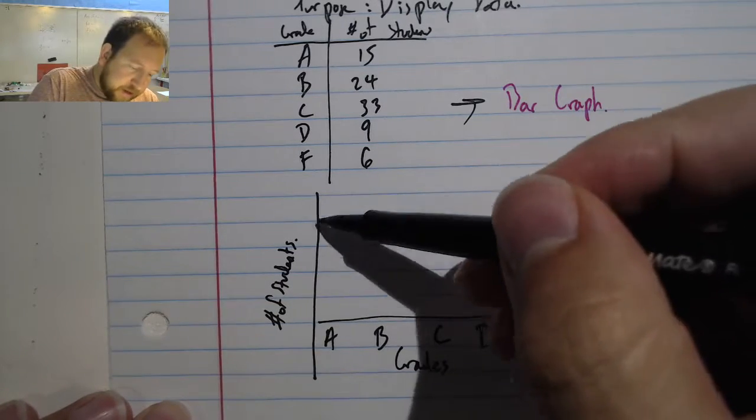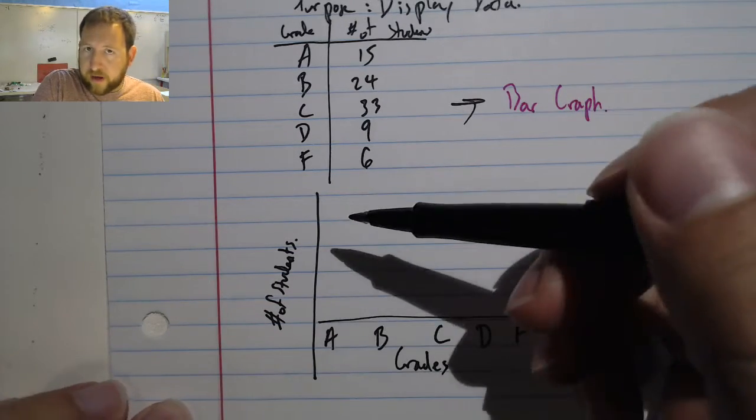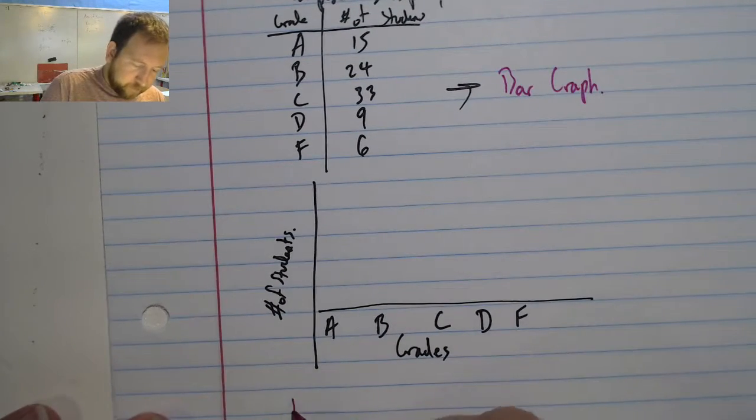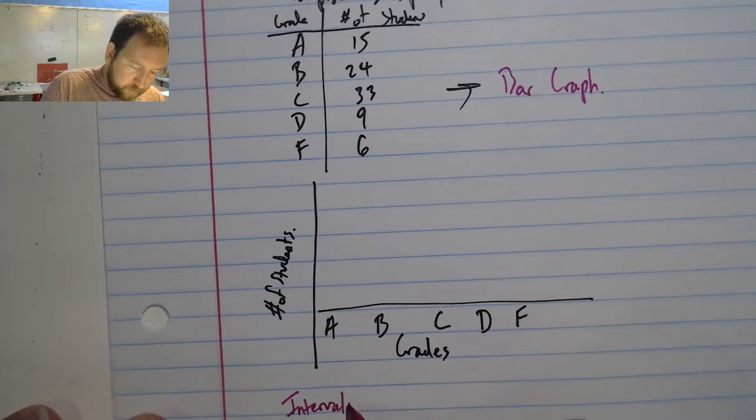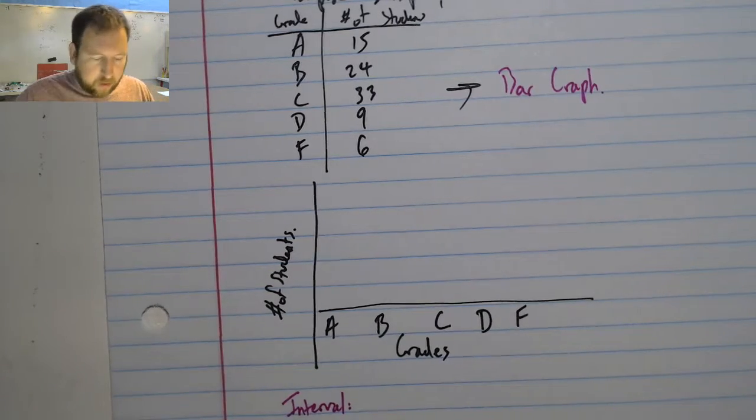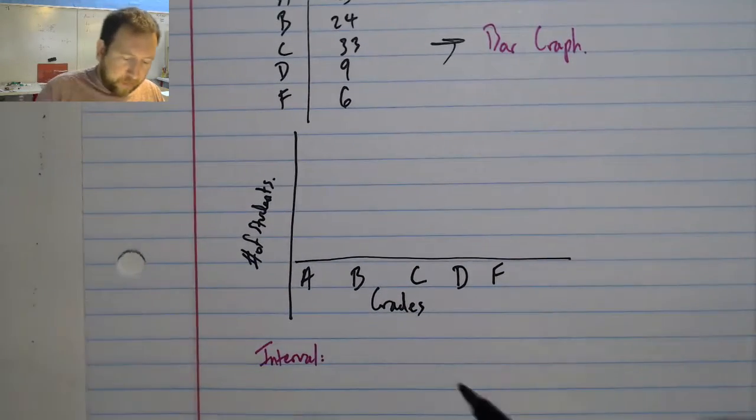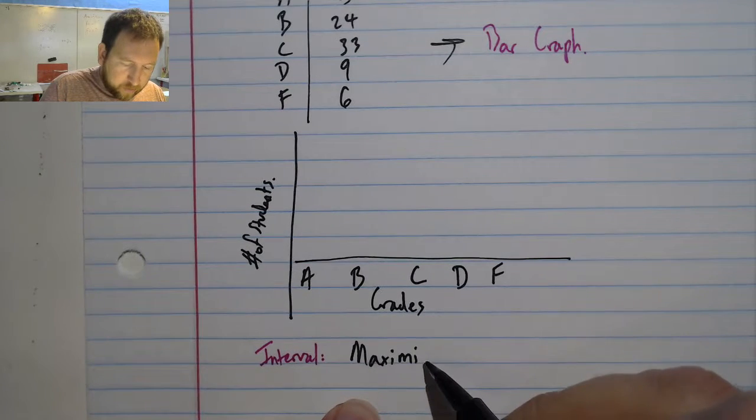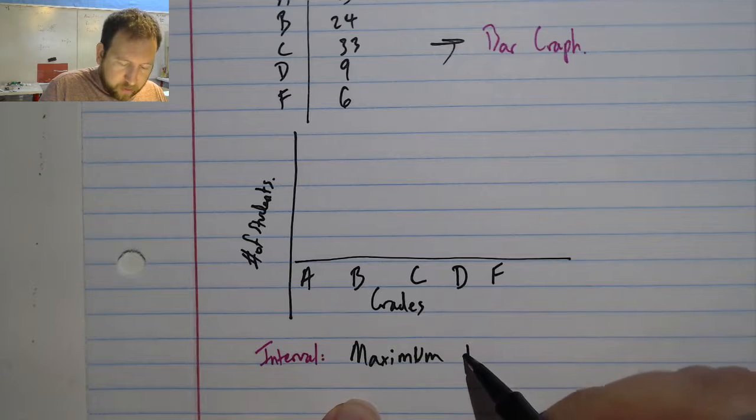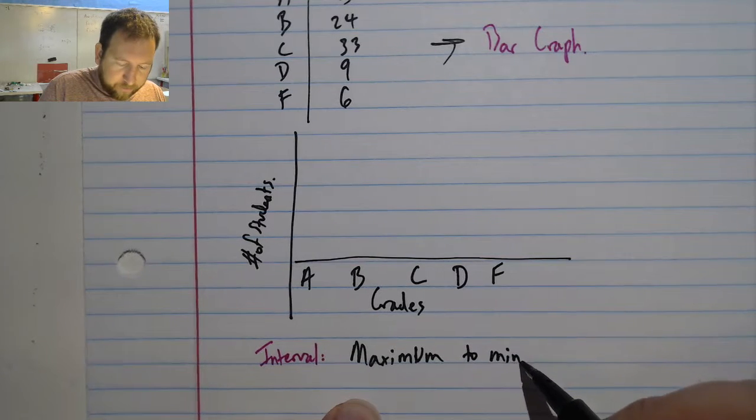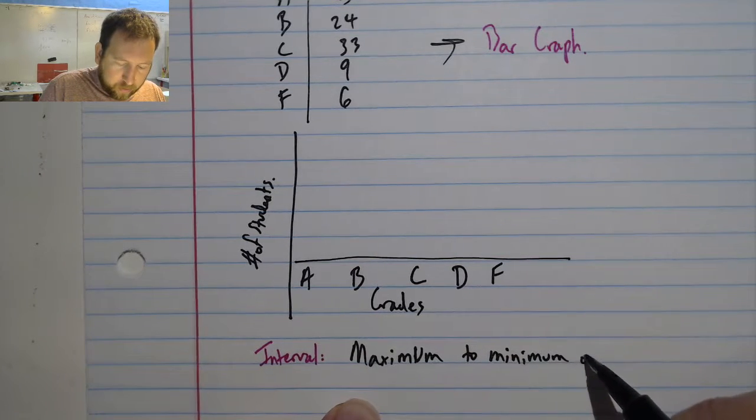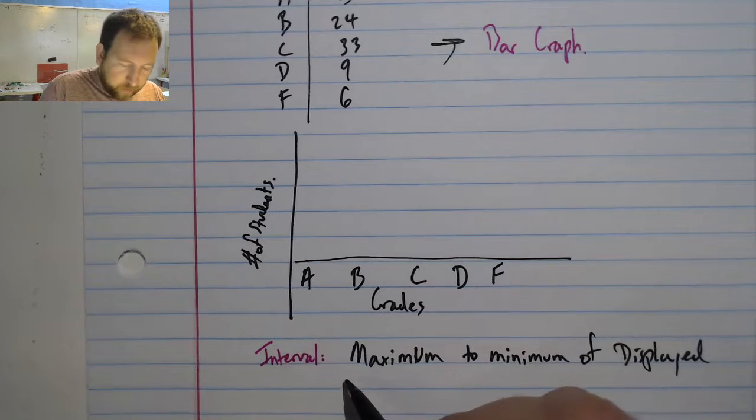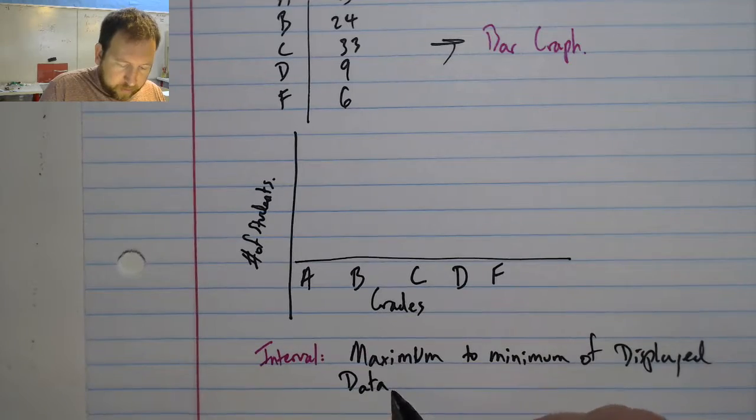Now I need to decide the interval that I'm going to be looking at. The interval in this case is the maximum to the minimum of displayed data.